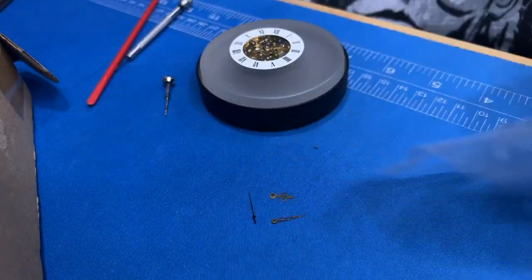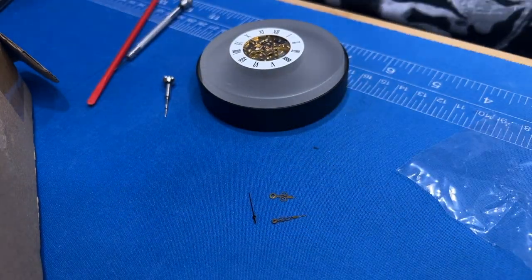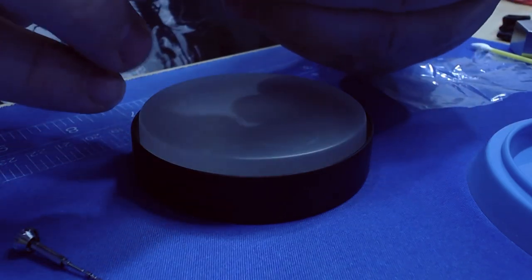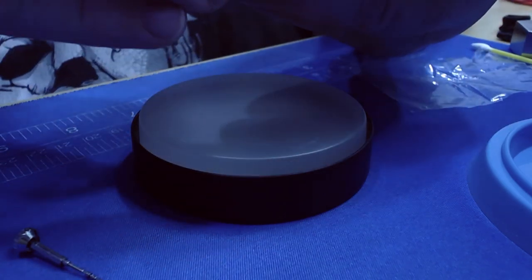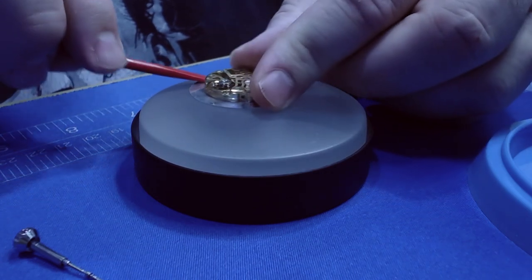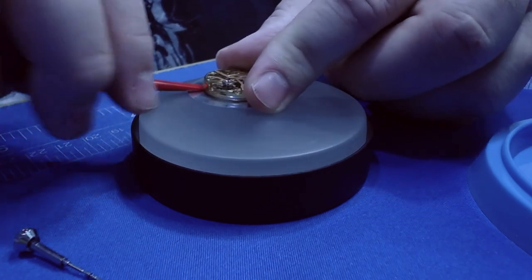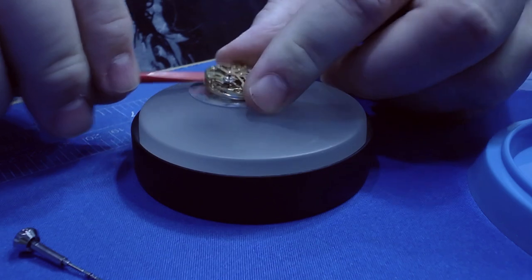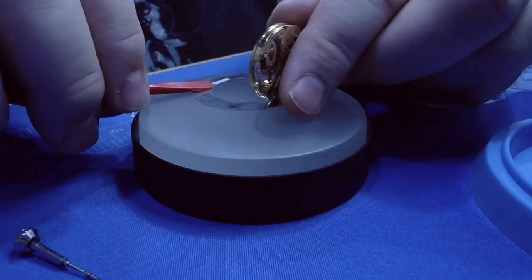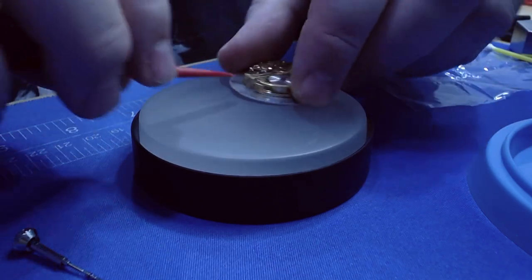So now it's open. You can probably see that the movement's much smaller than the case would make it seem from the outside. It's held in with a plastic bezel, and obviously that long stem allows winding from the outside, even though it's quite a long way from the outside of the case to the actual movement.